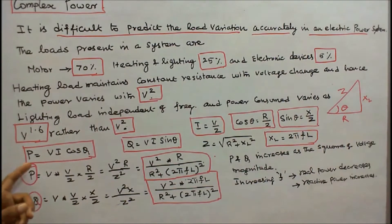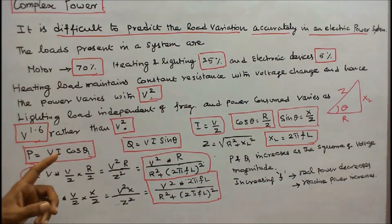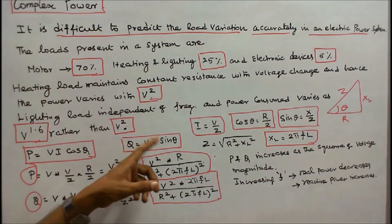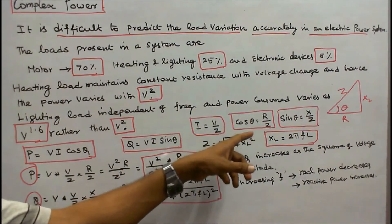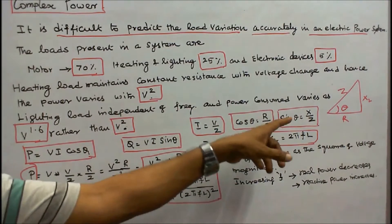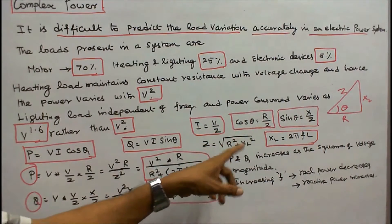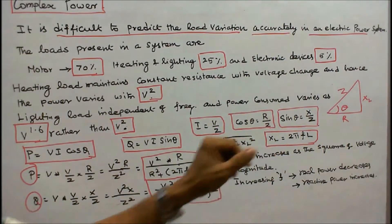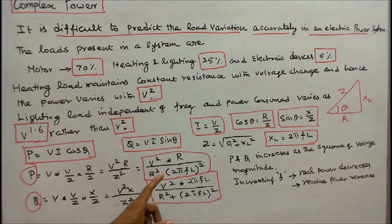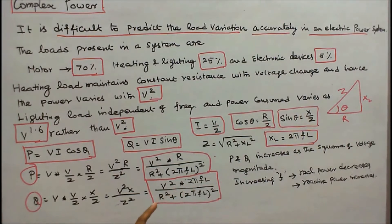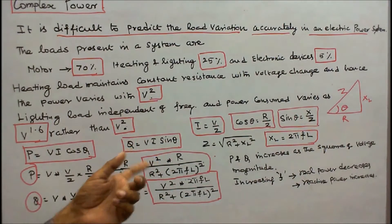Real power P equals V times I times cos theta, and reactive power Q equals V times I times sin theta. Using Ohm's law: I equals V divided by Z, cos theta equals R divided by Z, sin theta equals X divided by Z, and Z equals root of R squared plus XL squared, where XL equals 2pi times F times L. Therefore, real power P equals V squared times R divided by (R squared plus (2pi·F·L) squared), and reactive power Q equals V squared times 2pi·F·L divided by (R squared plus (2pi·F·L) squared).